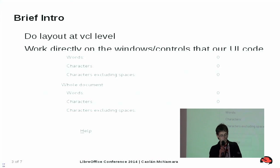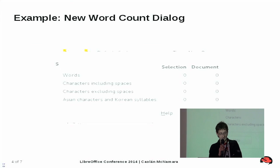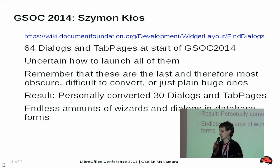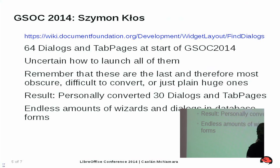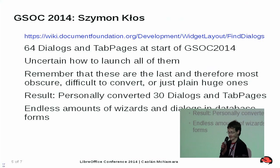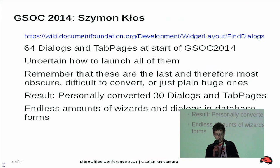This is just where we came from — the old layout, from the old word count dialog — and that's what it looks like in the new format. At the beginning of Google Summer of Code, we think we had 80% of everything converted over, and there were 64 or 70 dialogs in that region that had pages left to convert.